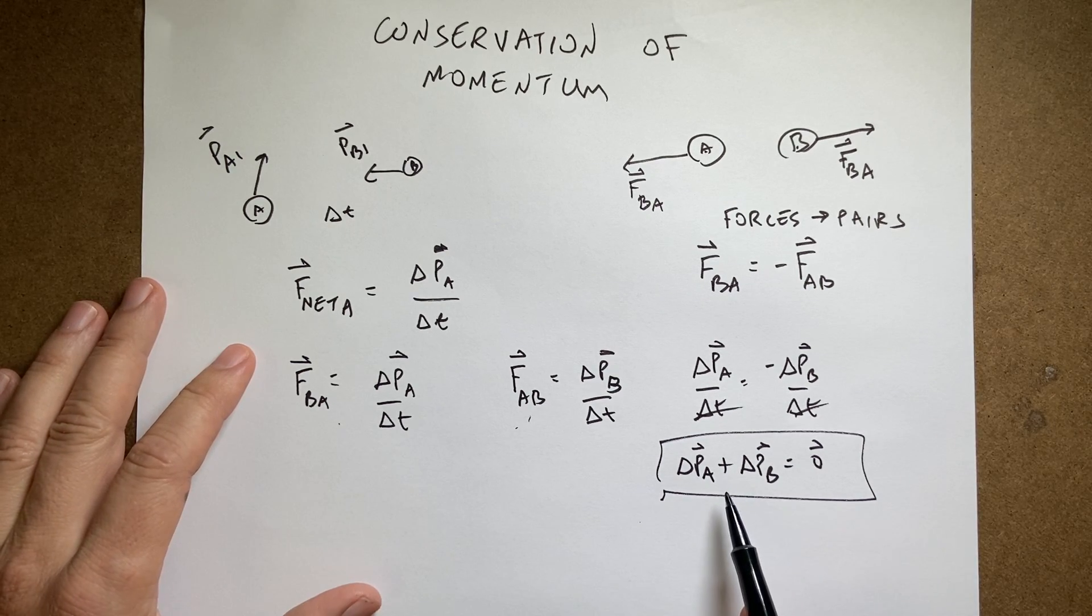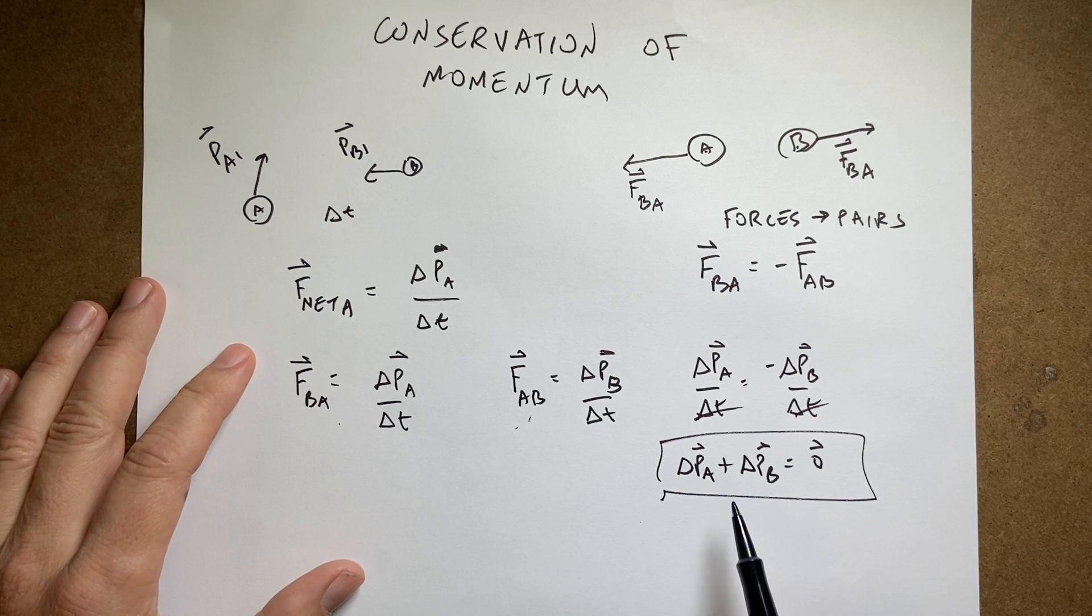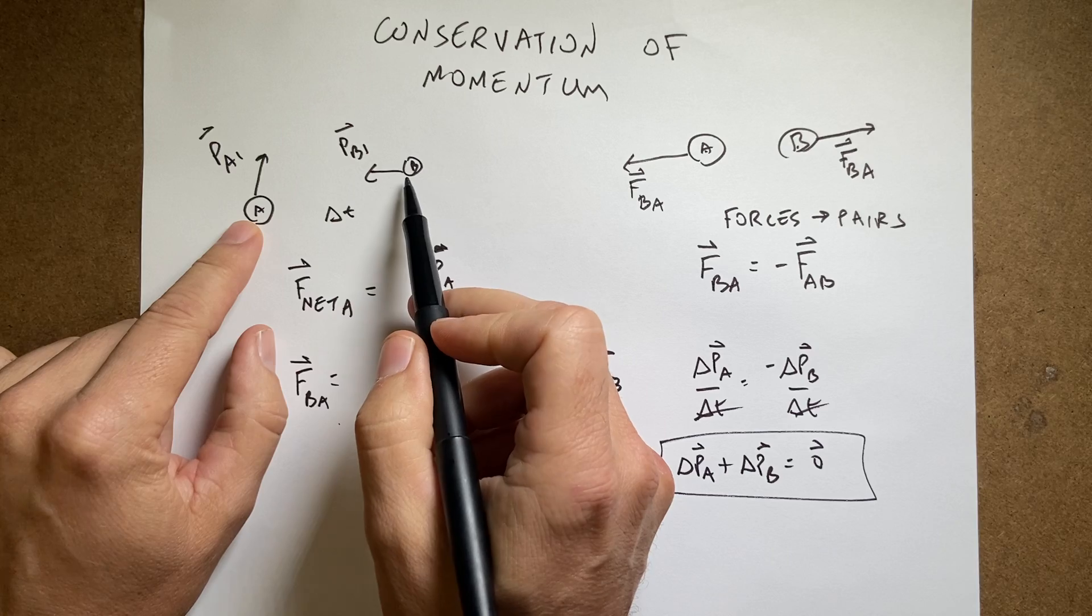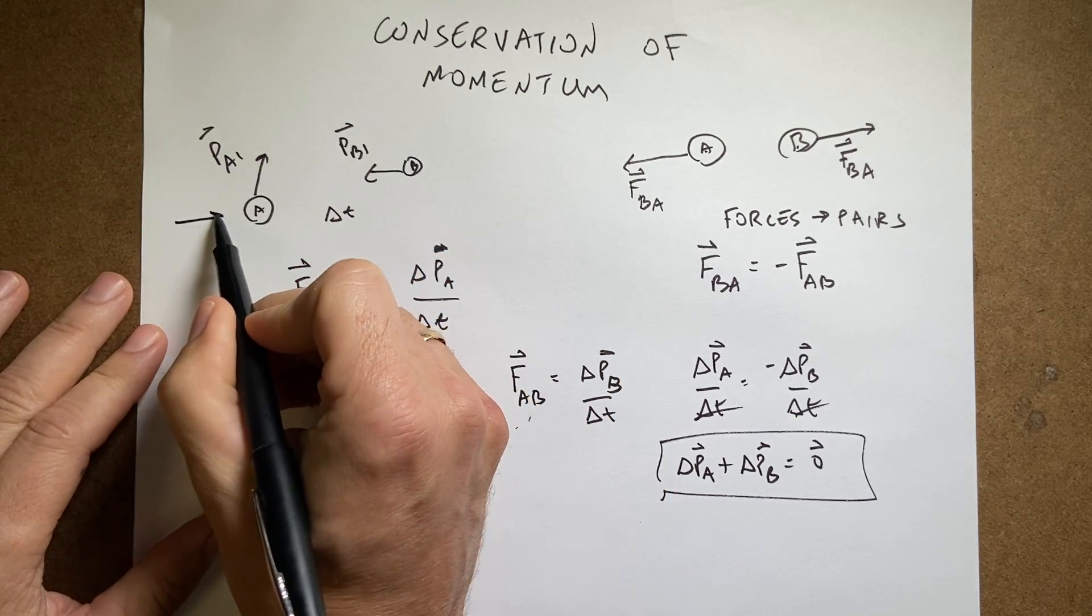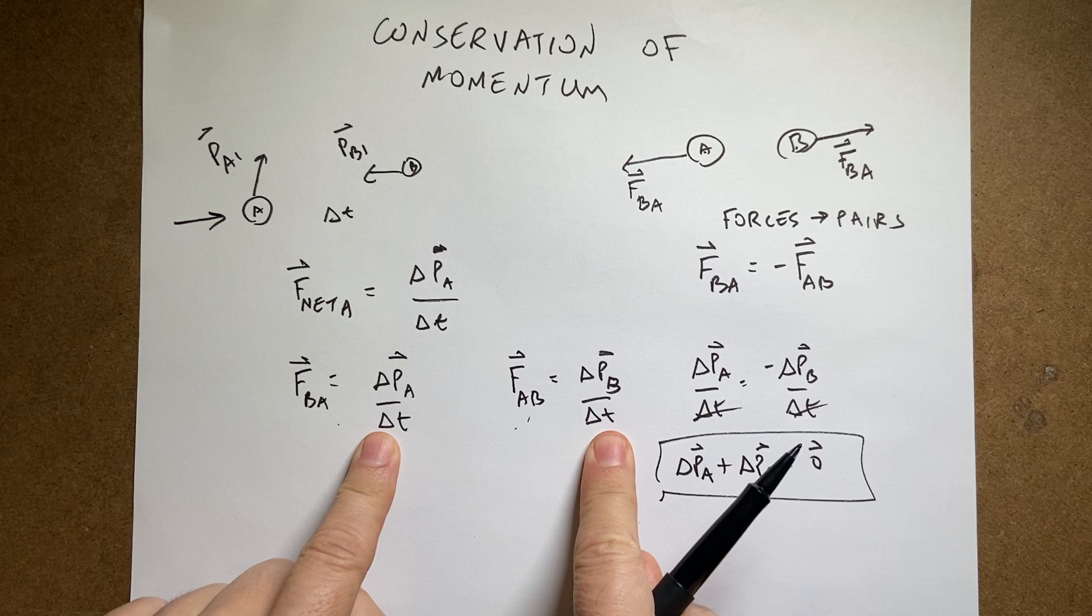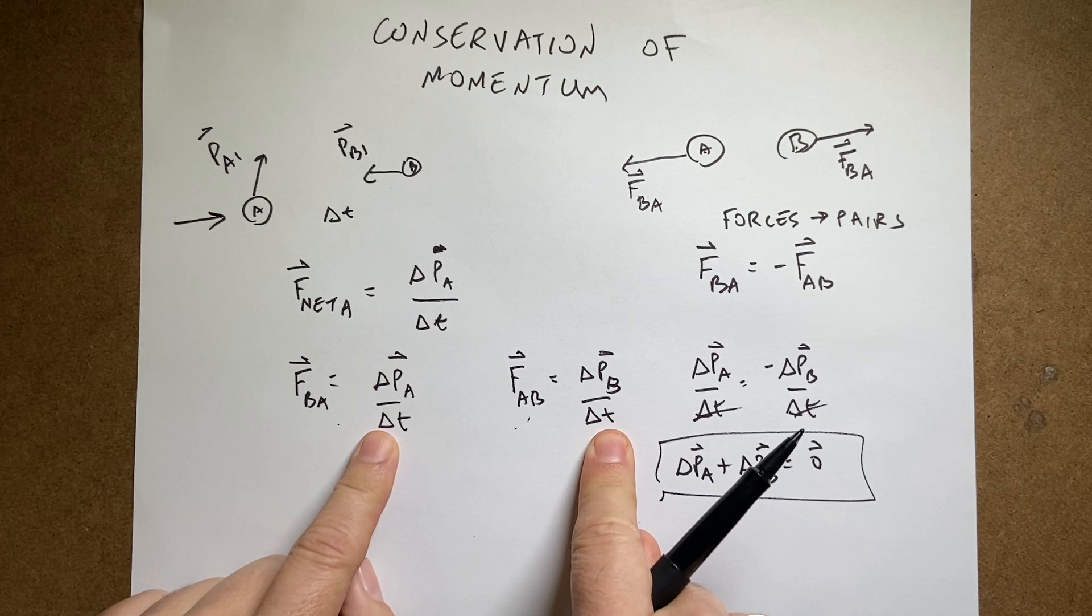This says that if there are no external forces, then the total change in momentum has to be zero. That's exactly what that says. And, it's important to note that if there was some other force acting on this particle right here, then these two would not be equal and opposite of each other. Momentum would not be conserved.